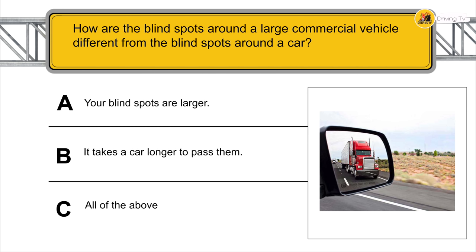How are the blind spots around a large commercial vehicle different from the blind spots around a car? Your blind spots are larger, and it takes a car longer to pass them.